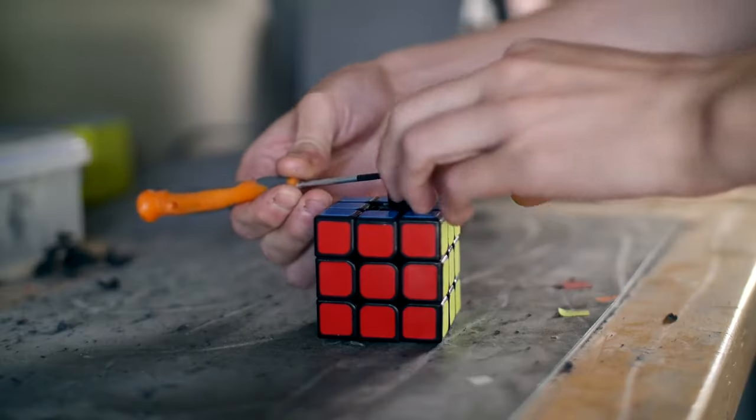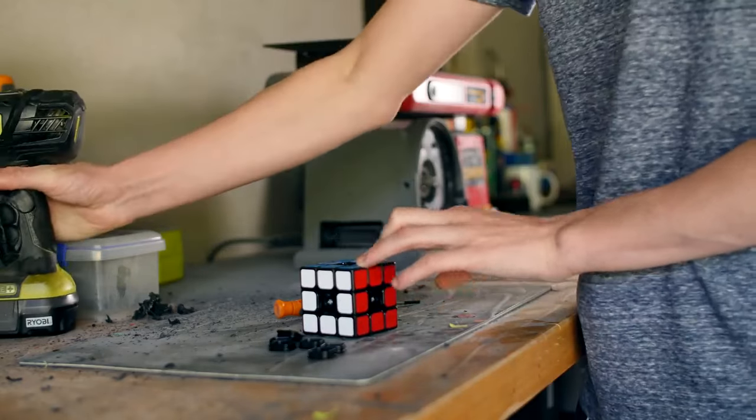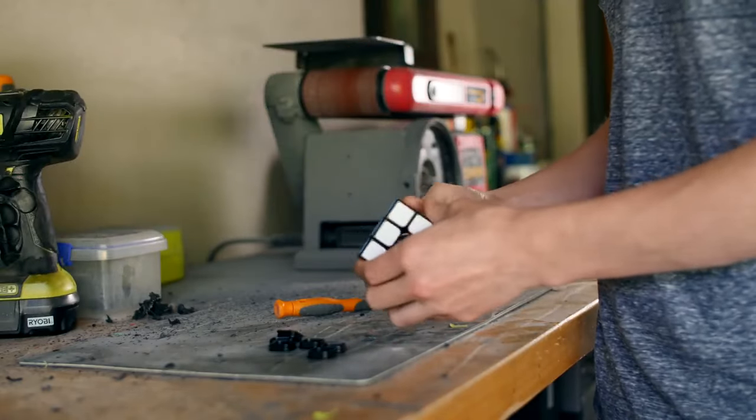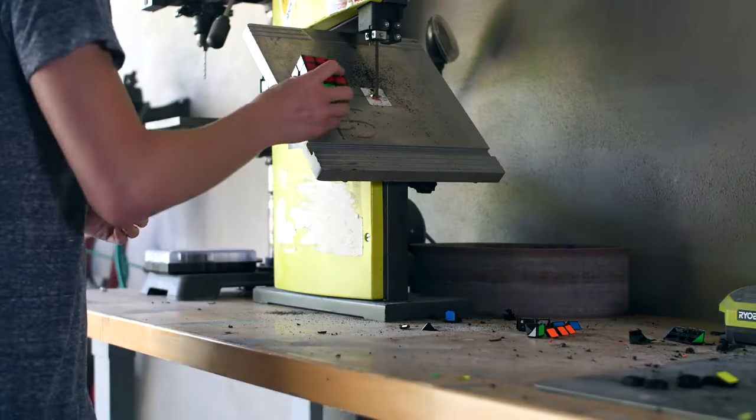I took all the center caps off a 3x3 and tightened it up so that it wouldn't turn. After everything was tightened up, I checked the puzzle to make sure nothing was turning and then took it over to my bandsaw.